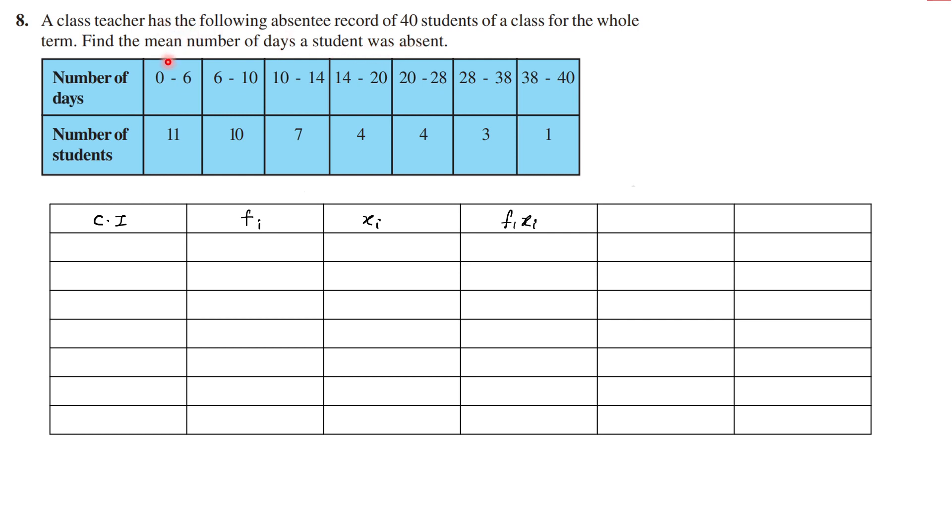In this question we are asked to find the mean for the given data. Here we have data with class intervals, so I need to identify these class intervals first. The class intervals are: 0 to 6, 6 to 10, 10 to 14, 14 to 20, 20 to 28, 28 to 38, and 38 to 40.